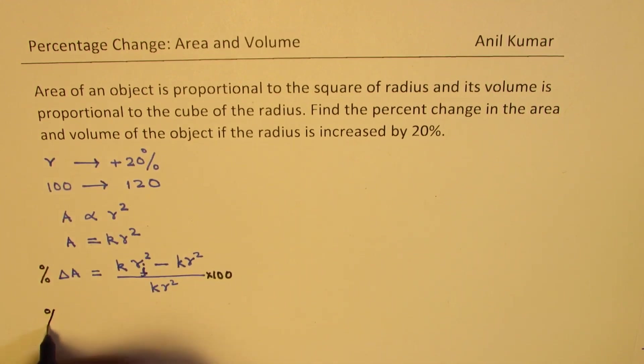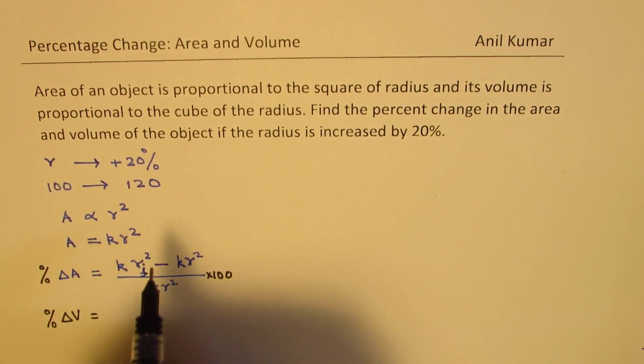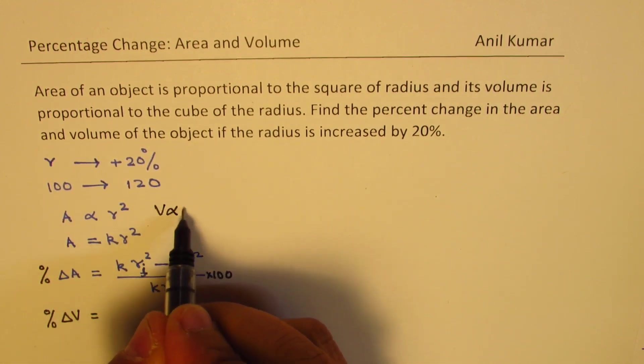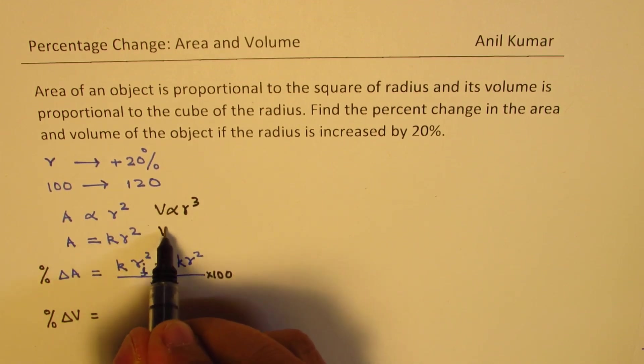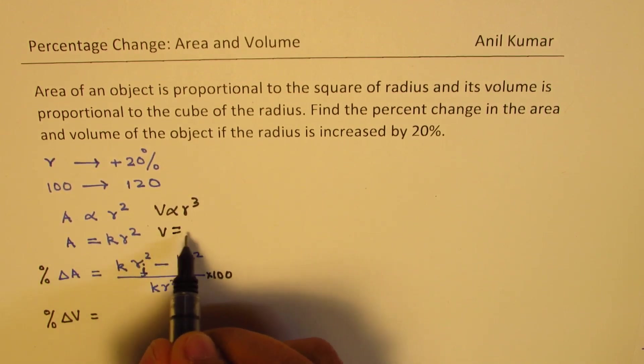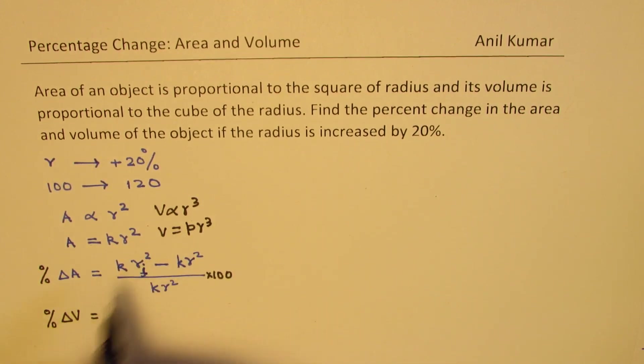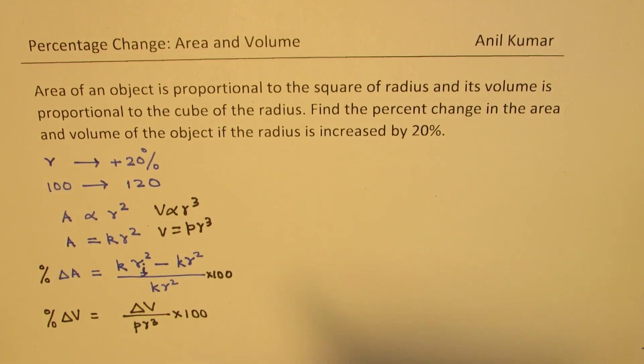Similarly the percent change in volume will be let us assume that the volume is proportional to R cube and volume will then be equal to some other constant. Let's say P times R cube. So that means we can write this as change in volume over original volume which will be P times R cube times 100. So we can work on the change also. So that is the basics about this.